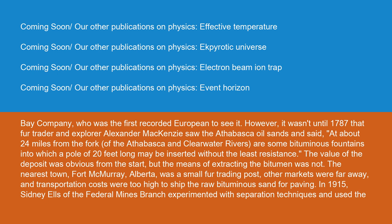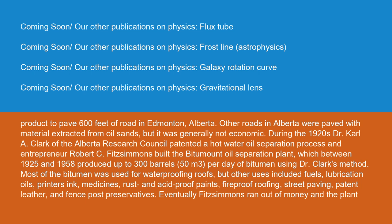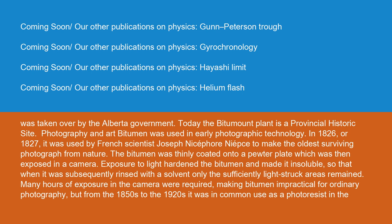In 1915, Sidney Ells of the Federal Mines Branch experimented with separation techniques and used the product to pave 600 feet of road in Edmonton, Alberta. During the 1920s, Dr. Karl Clark of the Alberta Research Council patented a hot water oil separation process, and entrepreneur Robert C. Fitzsimmons built the Bitumont Oil Separation Plant, which between 1925 and 1958 produced up to 300 barrels (50 cubic meters) per day of bitumen using Dr. Clark's method. Most of the bitumen was used for waterproofing roofs, but other uses included fuels, lubrication oils, printer's ink, medicines, rust and acid-proof paints, fireproof roofing, street paving, patent leather, and fence post preservatives. Eventually Fitzsimmons ran out of money and the plant was taken over by the Alberta government. Today, the Bitumont Plant is a provincial historic site.